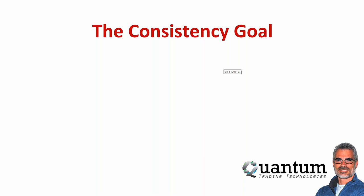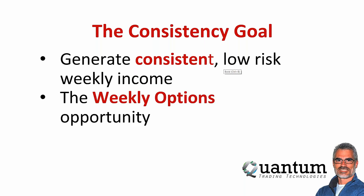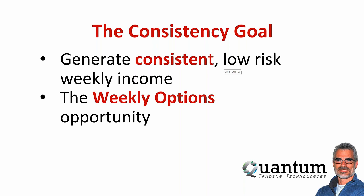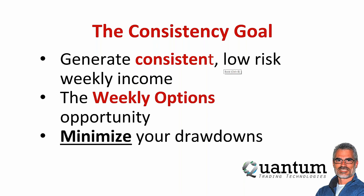That's why you want low risk. That's why one of the strategies I focus on for compounding is in the weekly options area. You want to generate consistent, low-risk weekly income, and I'm going to show you several ways to do that through the weekly options opportunity. I'm going to give you the formula for doing that and show you how to minimize your drawdowns, lower your risk, and increase probability.